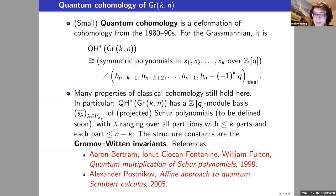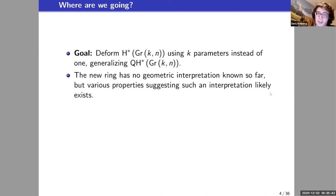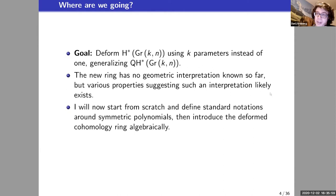The goal of this talk is to deform the cohomology ring not just with a single q, but with k parameters, thus generalizing quantum cohomology. This new ring — I don't know what it means geometrically, but I have some indications that it does have a geometric meaning; maybe it's K-theory of something, maybe it's a representation ring of something. Let me start from scratch and quickly go over standard notions around symmetric polynomials, and then I'm going to introduce this deformed cohomology ring purely algebraically.